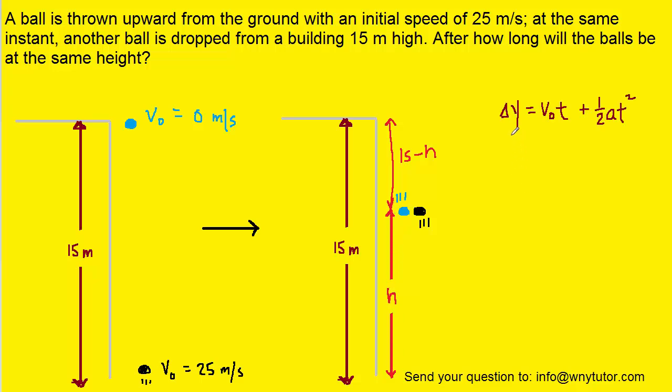Now we're going to consider the following equation from kinematics for both the blue ball and the black ball. Let's start with the blue one. We can see from the picture here that the blue ball falls a distance of 15 minus h.